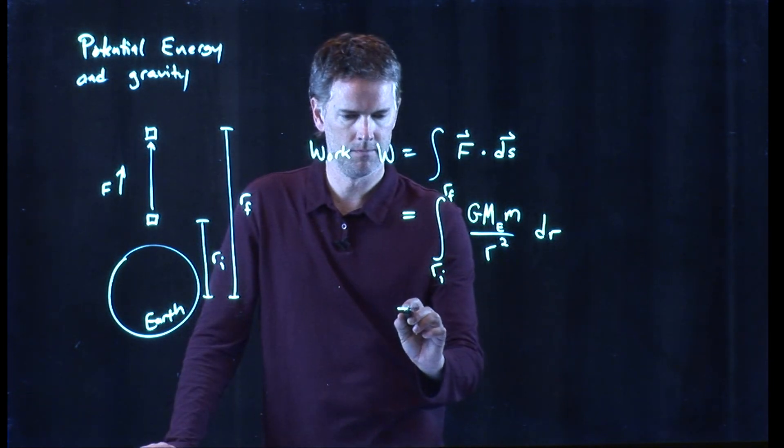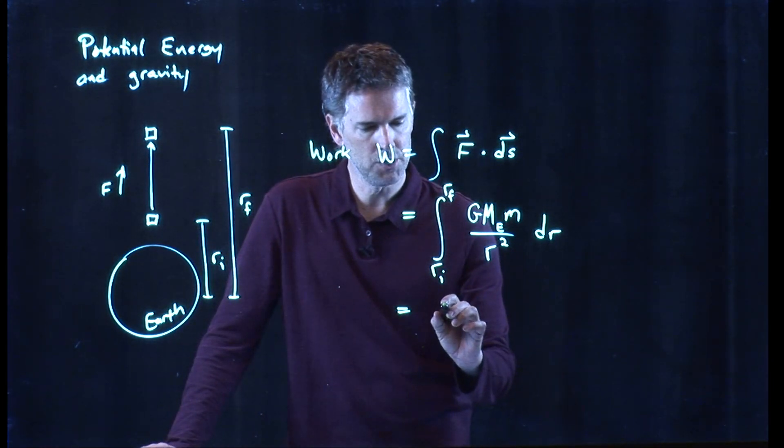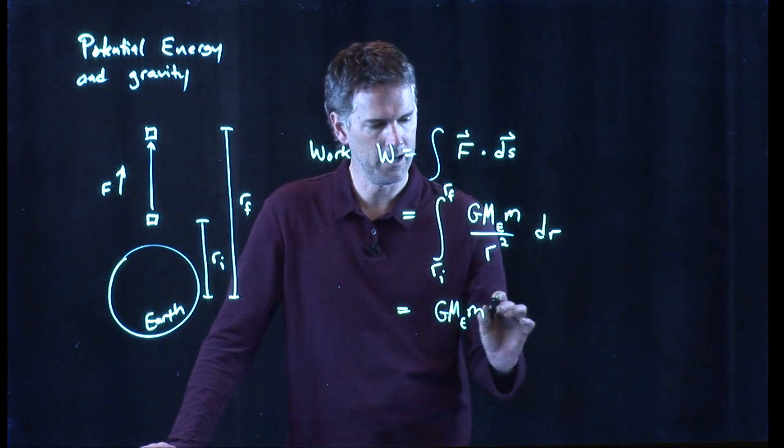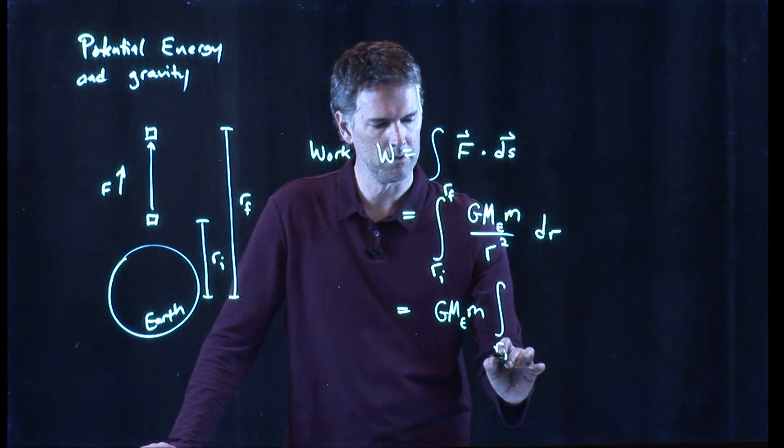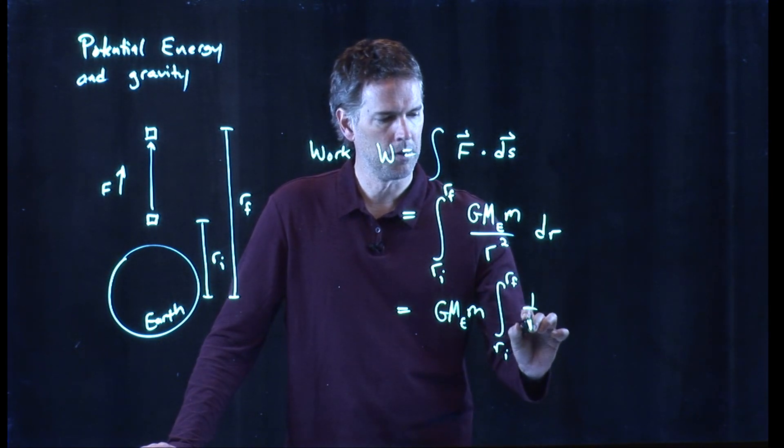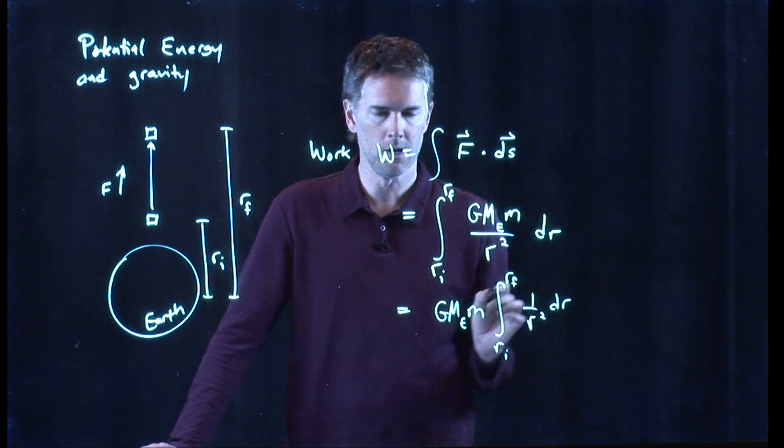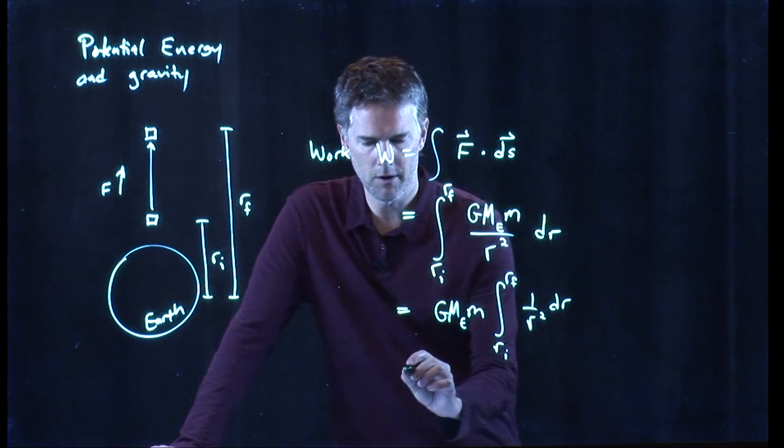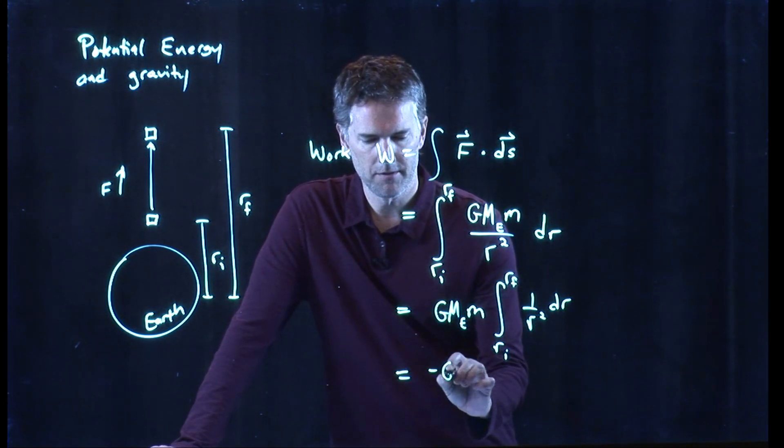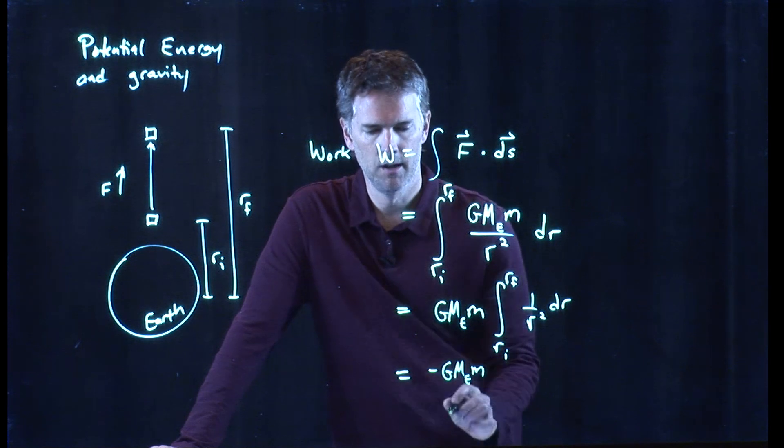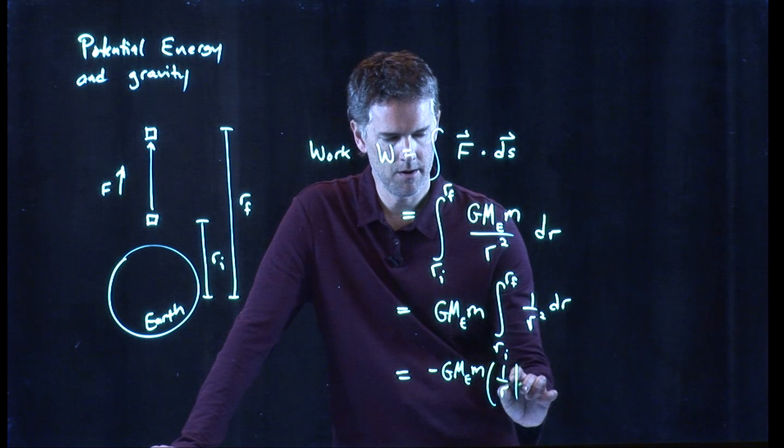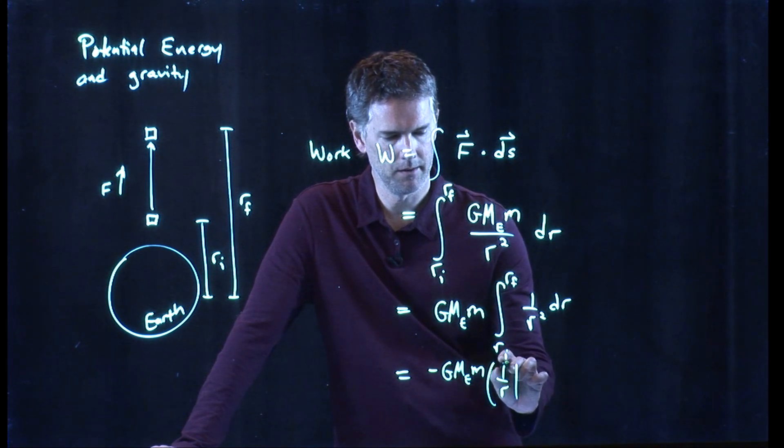All right. We can probably do that. We've got a G, m_E, m. Those are all constants. We can put those in front of the integral. We have a 1 over r squared dr. And we know how to do that, right? Integral of 1 over r squared is just negative 1 over r. So let's put the negative sign out in front. This becomes a 1 over r, and we are evaluating that 1 over r from r_i to r_f.